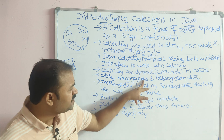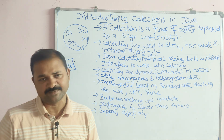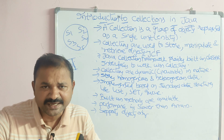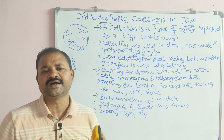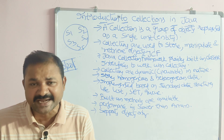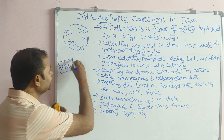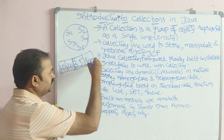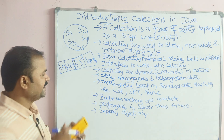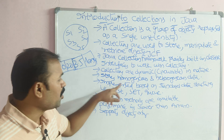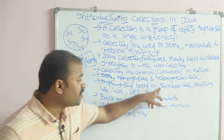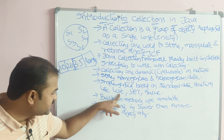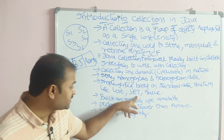Collections store both homogeneous and heterogeneous data, meaning we can store objects of similar data types or different data types — there is no problem. Collections are implemented based on standard data structures such as List, Set, and Queue.